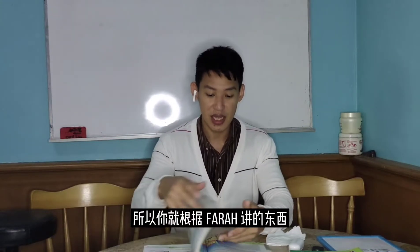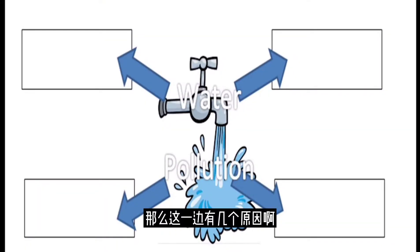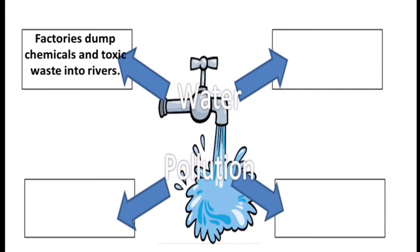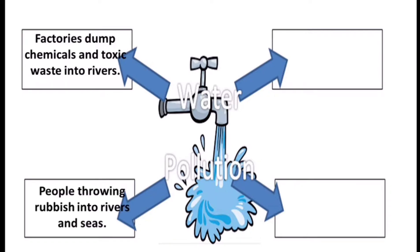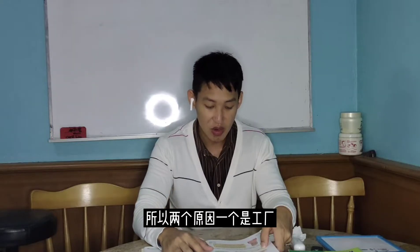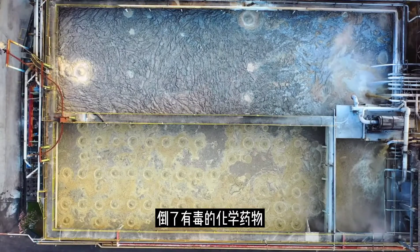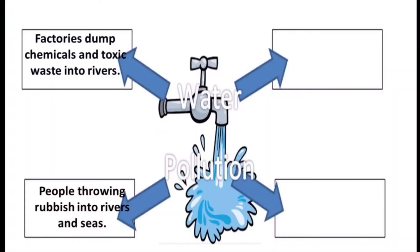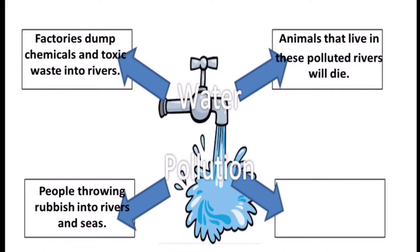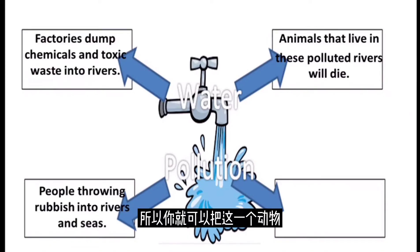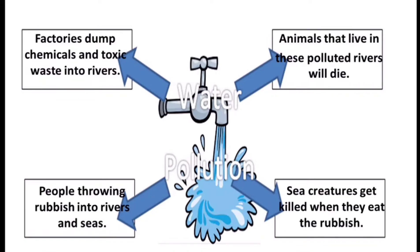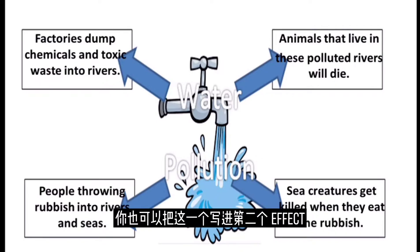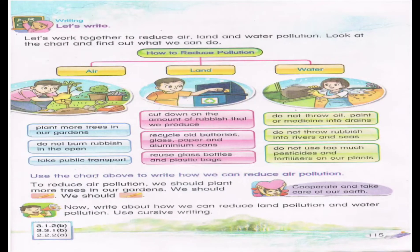You can find Farah's story and write it. There are several reasons. First, factories dump chemicals and toxic waste into rivers. Second, people pollute rivers and seas by throwing rubbish into them. For the effects: animals that live in these polluted rivers will die, and many sea creatures get killed when they eat the rubbish. You can fill these into the effects section of the chart. Next, we turn to page 115.